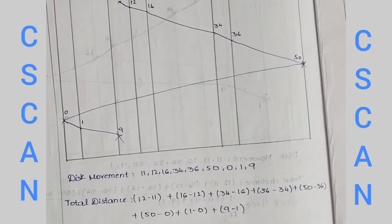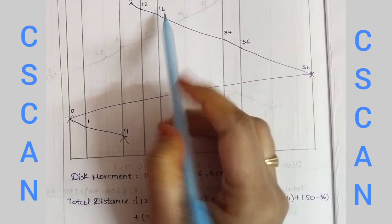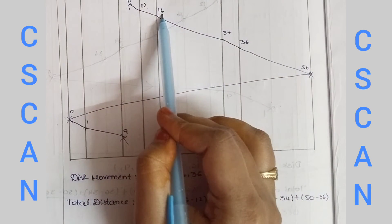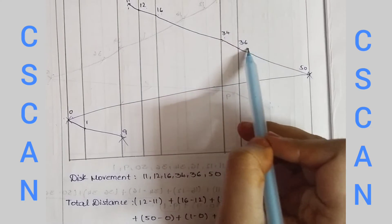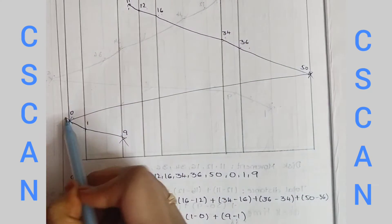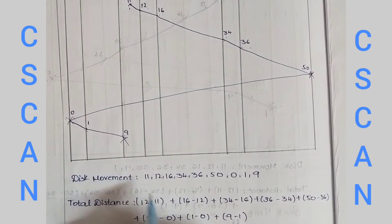So in the beginning, the disk movement is 11 and 12, 12 to 16, 34, 36, 50, then to 0, then 1 to 9. This is disk movement.